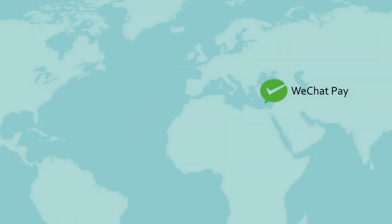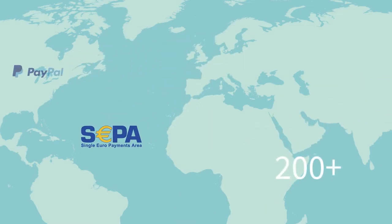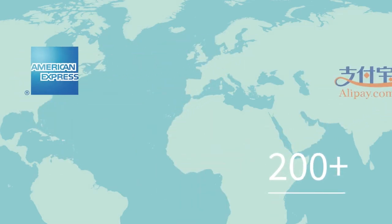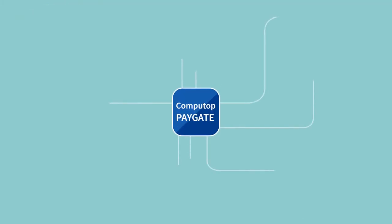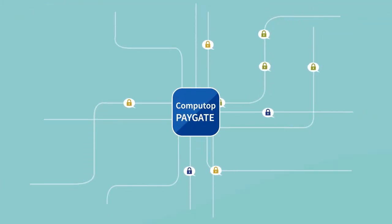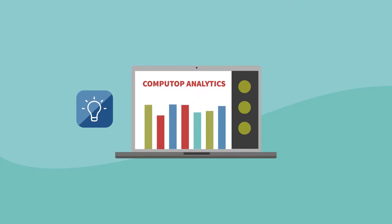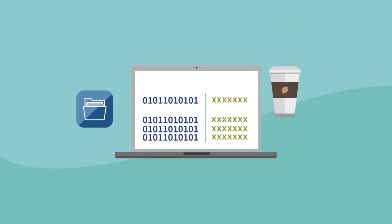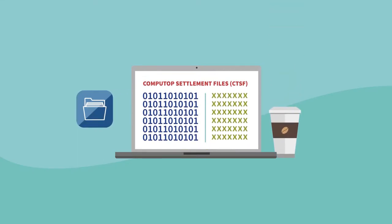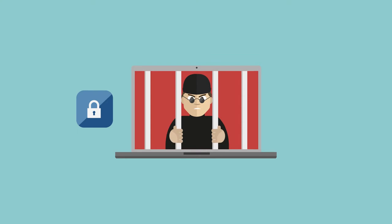The CompuTop pay gate provides additional benefits. More than 200 payment methods are available worldwide, depending on the customer's preferences. The transaction data from all the sales channels converge at CompuTop. Retailers can mine this data for valuable conclusions and identify potential optimizations. The accounts receivable can be automated. Naturally, all the information is securely encrypted. Plus, fraud prevention is also integrated.